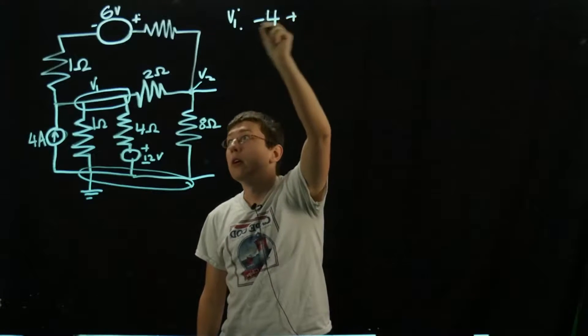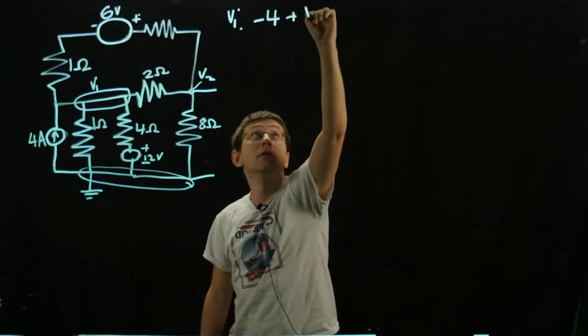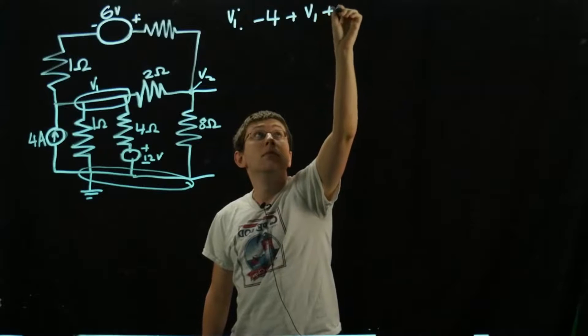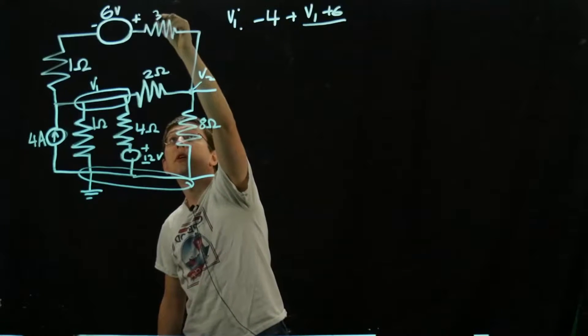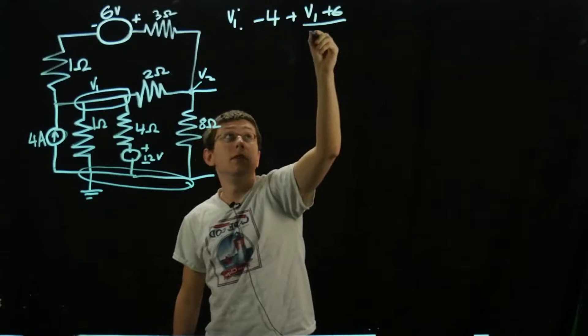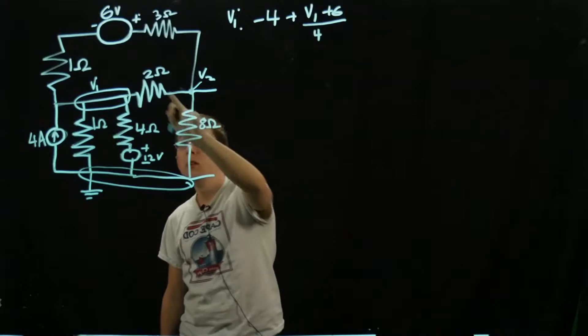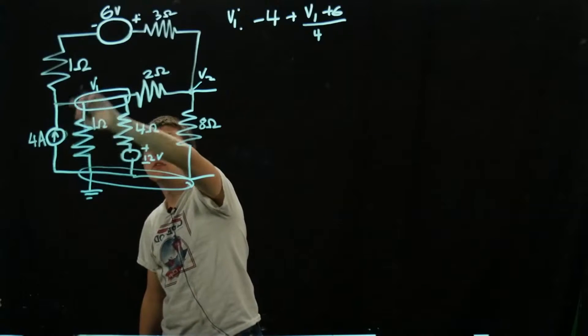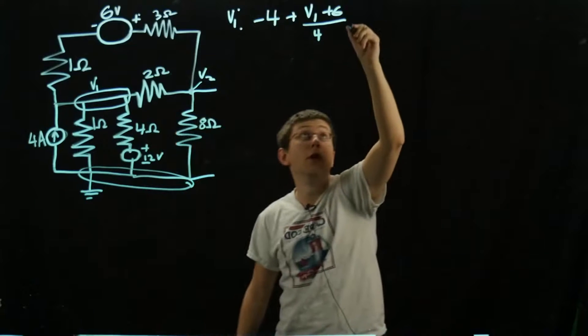We'll have that plus (V1 + 6 volts) divided by (3 + 1), which gives us 4 ohms. So that takes care of both this branch and this branch. Down here we have V1 over 1 ohm.